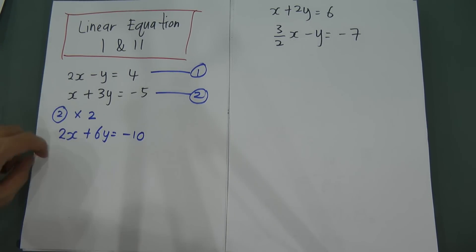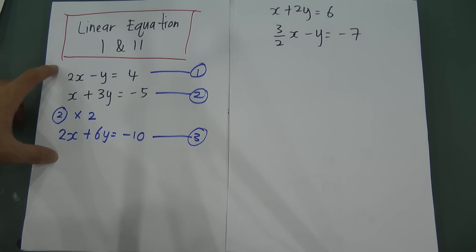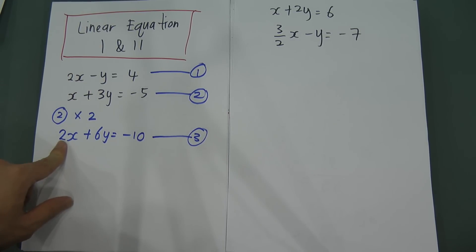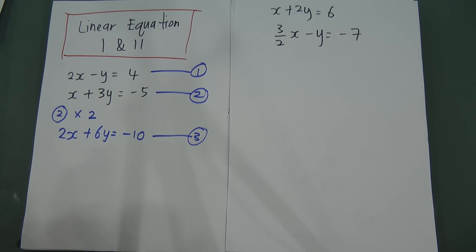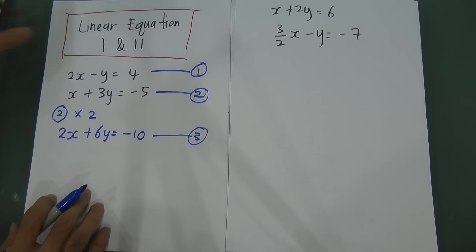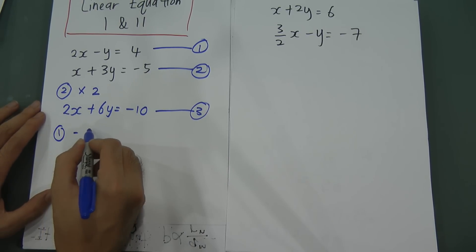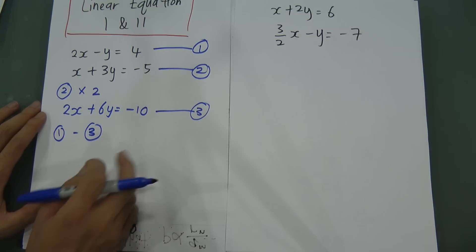I give this the label third equation. If I use the first equation minus the third equation, I can straight away delete 2x, because 2x minus 2x gives zero — x is gone. We are only left with y, and then we can easily find the answer for y. So I use first minus third.